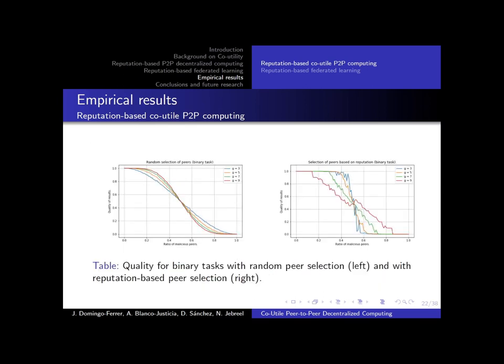Here we see quality for binary tasks: on the left when we choose peers at random, and on the right when we choose peers based on their reputation. For binary tasks, when we do not have reputations available, the more redundancy the better, and we get the best results when g equals 9, up to half of the peers being malicious. On the other hand, when we have reputations, we see that for g equals 3 — a redundancy of 3 — we have robust results up until half of the peers behave correctly. So reputations allow us to have less redundancy.